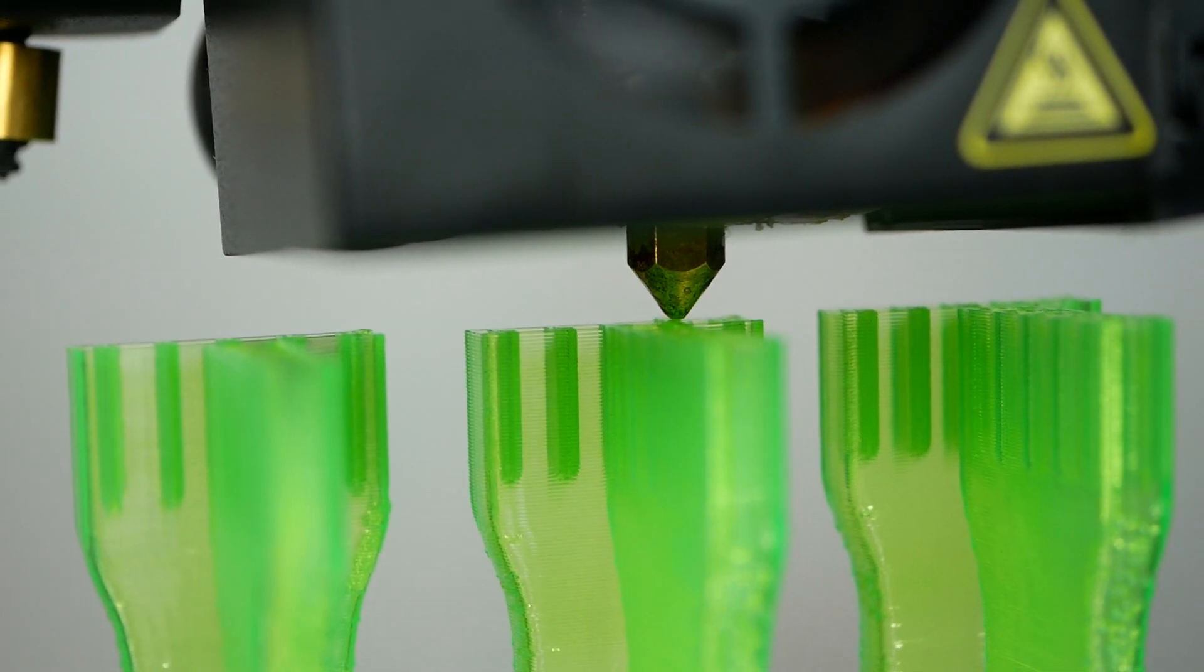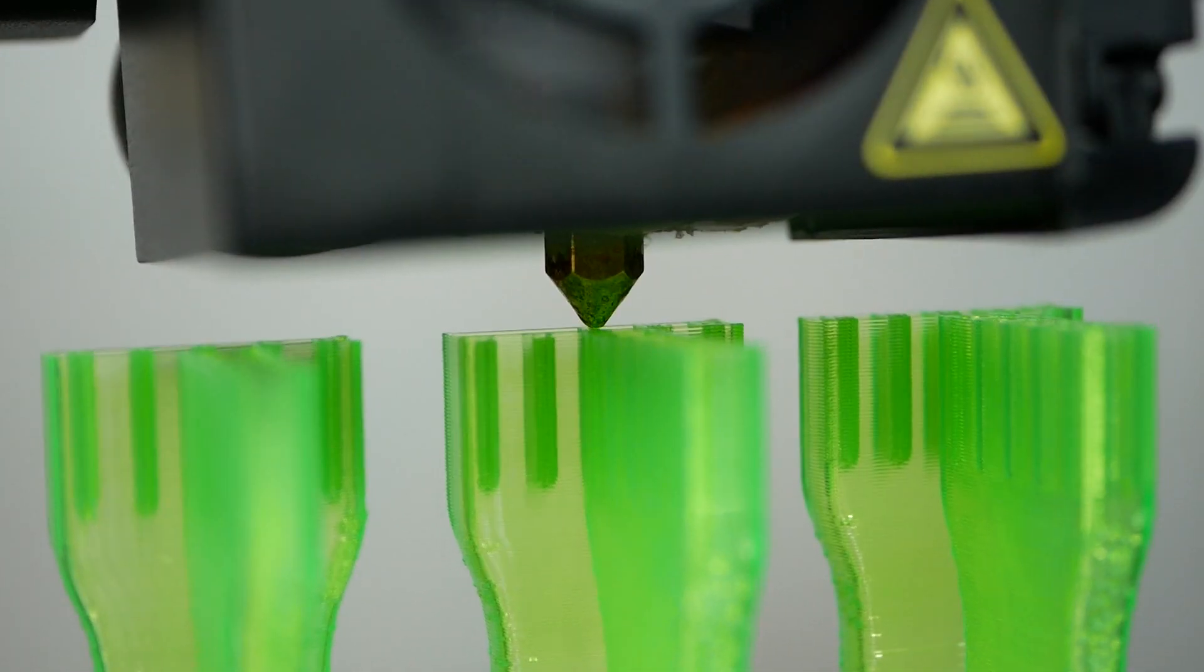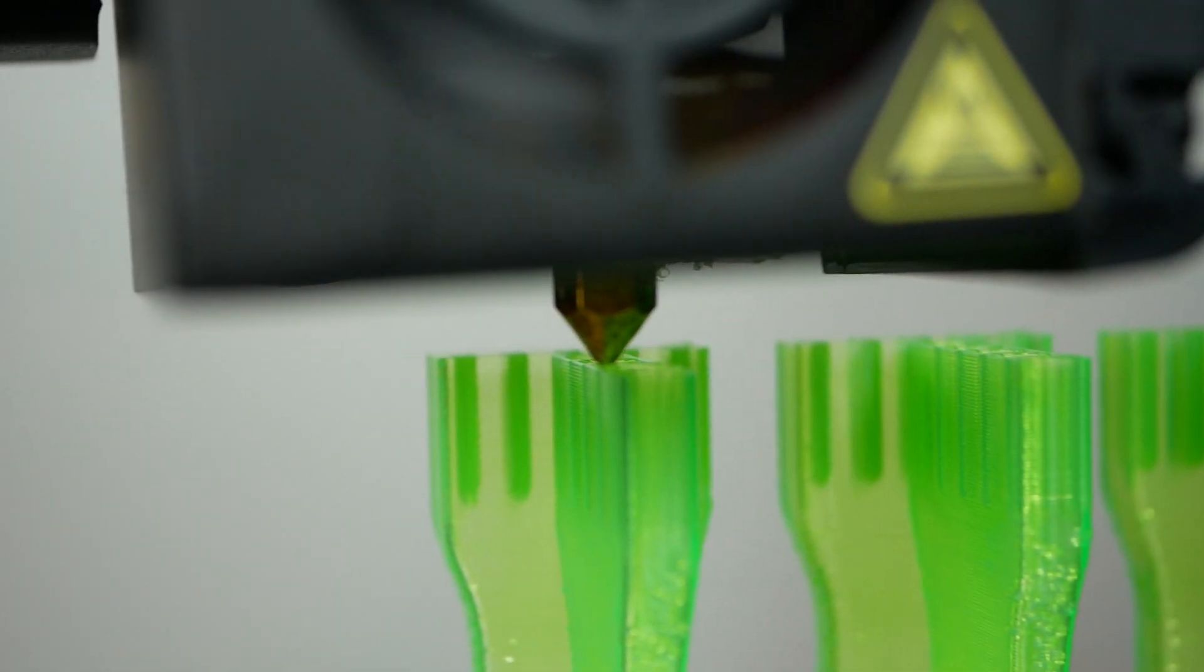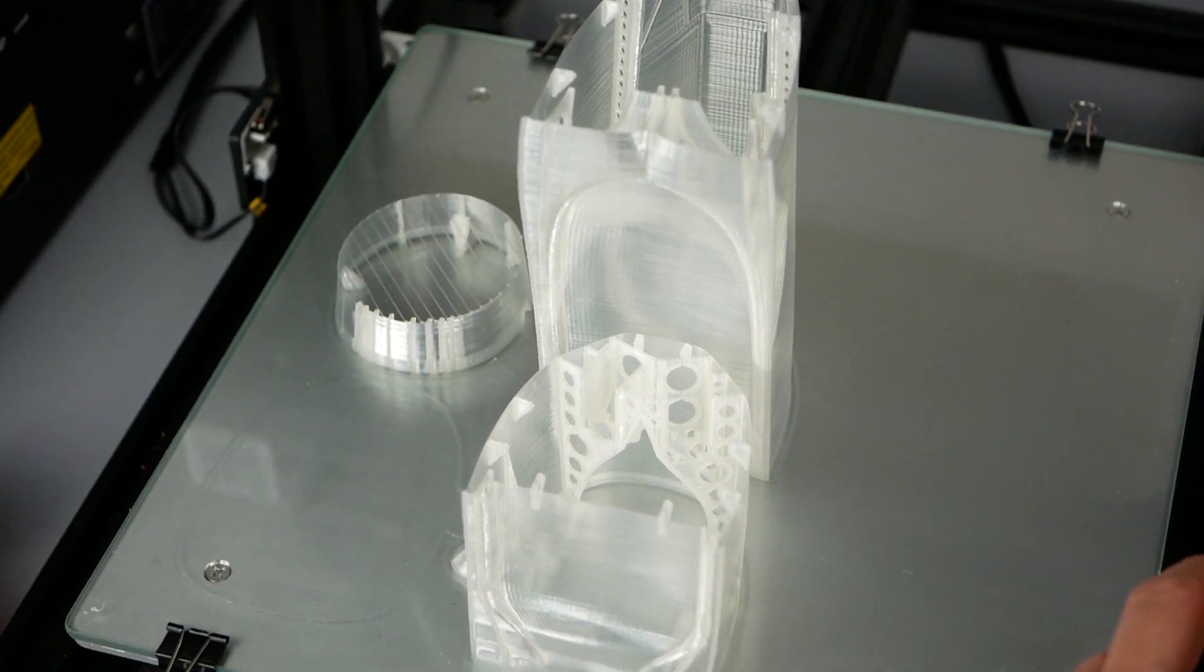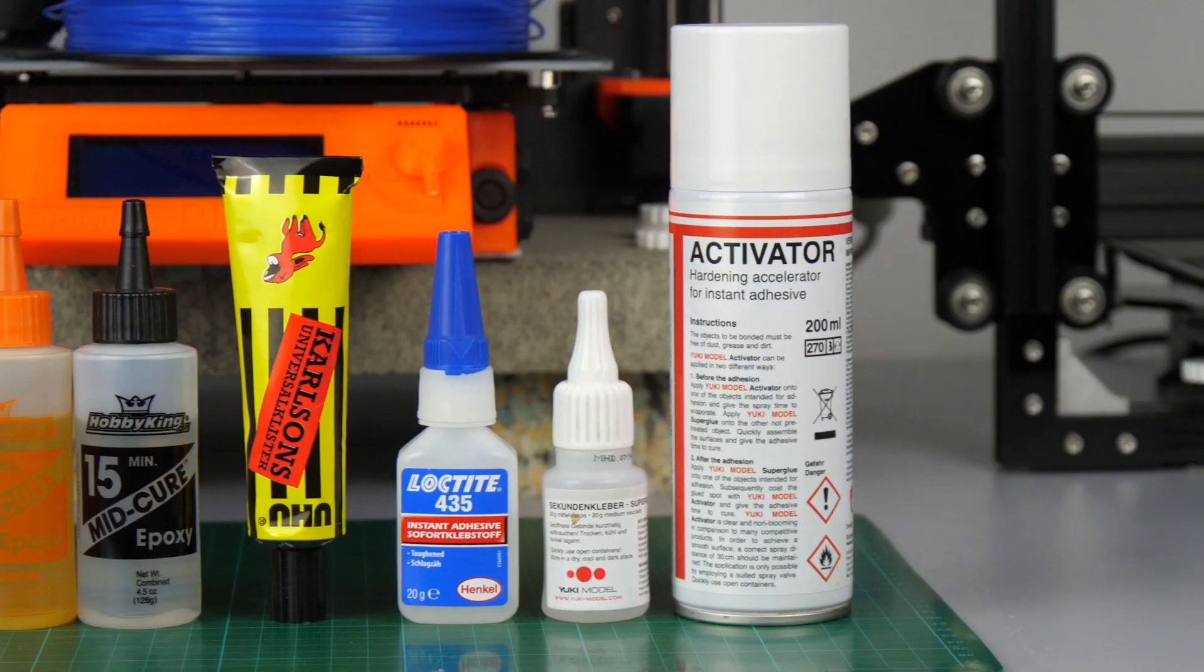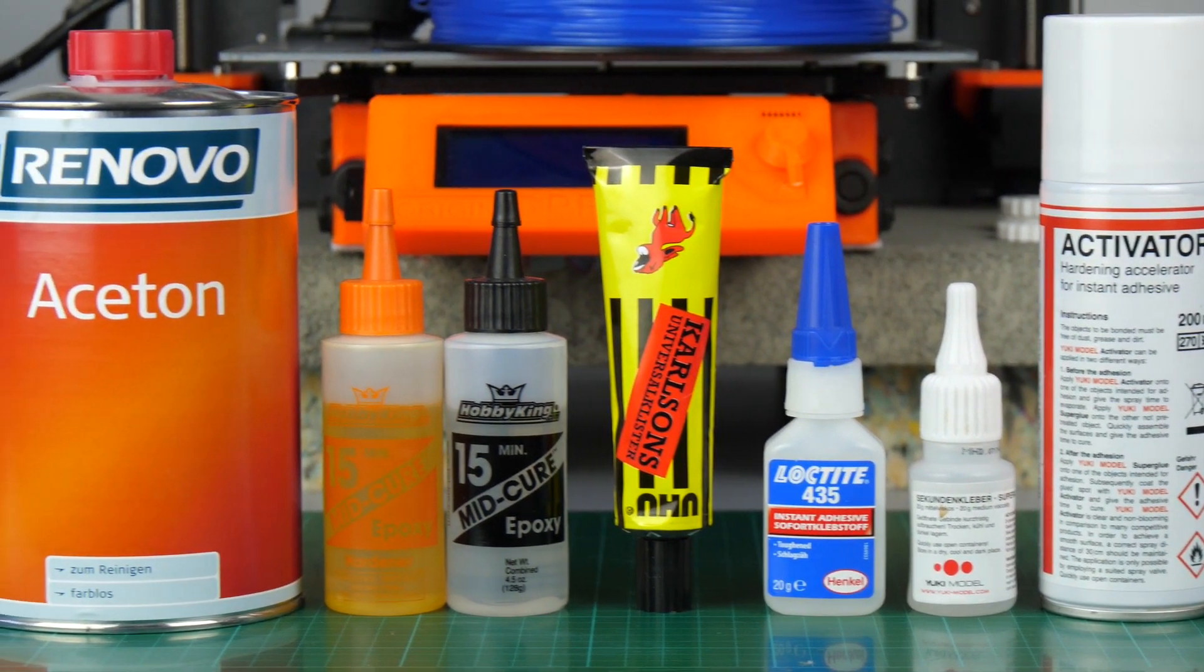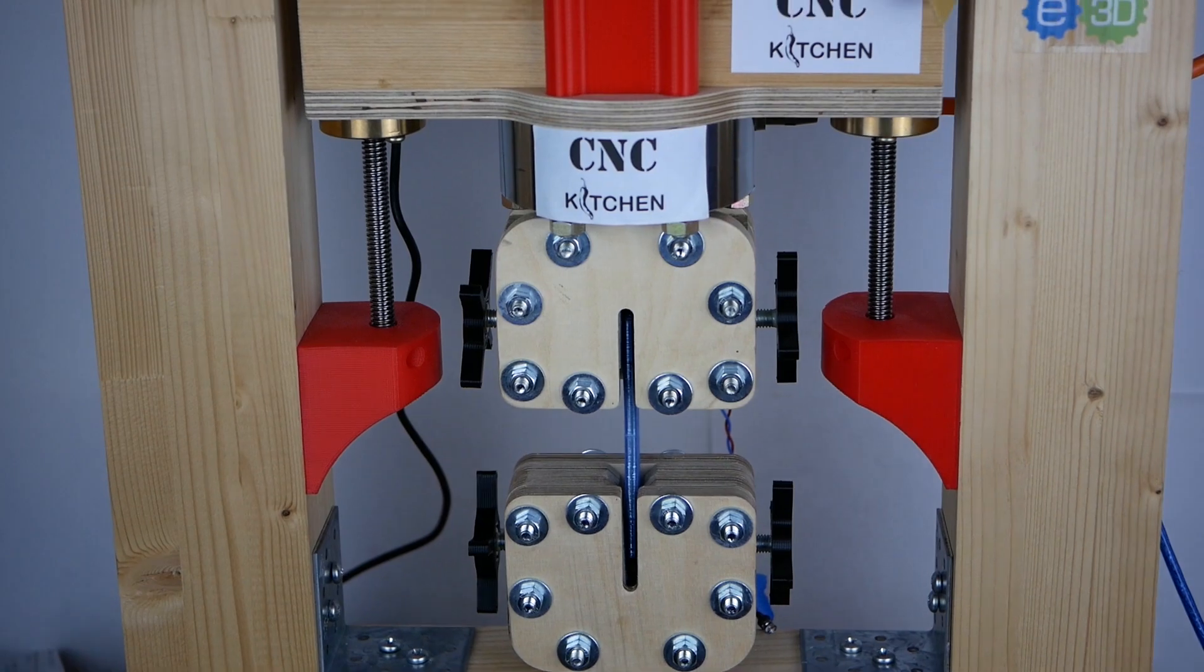In the first part of this video series we have tested out how we need to tweak the printing temperature and extrusion factor to get the optimum strength out of our 3D printed parts. Since the airplane we are going to create won't be printed as one piece, we'll need to glue the individual parts of the airframe together to get a finished model. So I have selected a couple of different glues which I used to bond halves of tensile test specimens together and then analyze their strength in my test machine.